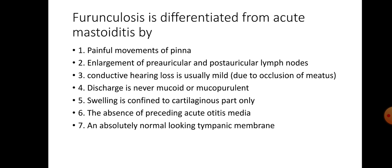Conductive hearing loss is usually mild due to occlusion of the meatus. Swelling is confined only to the cartilaginous part. There is an absence of preceding acute otitis media, and the tympanic membrane appears absolutely normal. Finally, an X-ray of the mastoid showing a clear air cell system excludes acute mastoiditis.